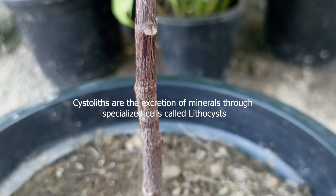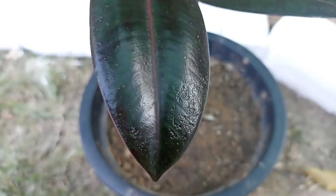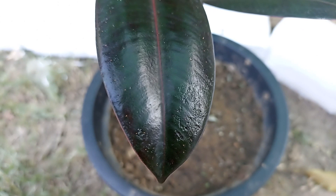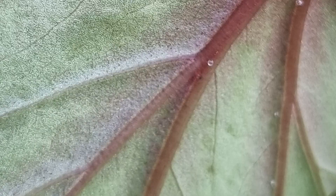Not all plants have these, but those that do often excrete their minerals on the underside of their leaves as pale white spots or hard droplets. This can be seen on some begonias too.